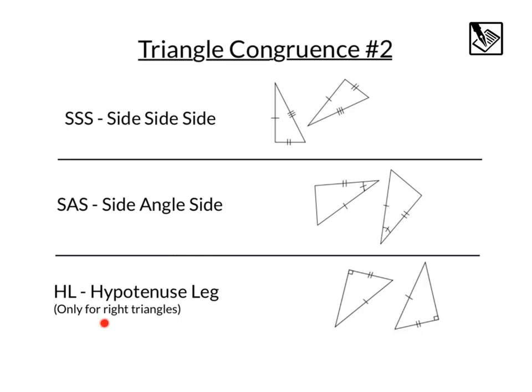And lastly, only applying to right triangles, we have the hypotenuse leg, which means if we have two right triangles and the hypotenuses are congruent, and one of the legs are congruent, we know the whole triangles are congruent. And this is basically side-side-side. If we use Pythagorean theorem, we can show that the third side matches.